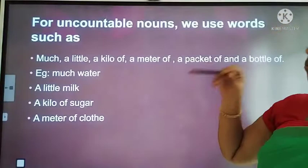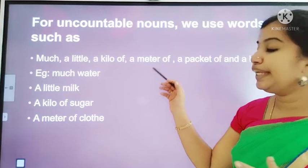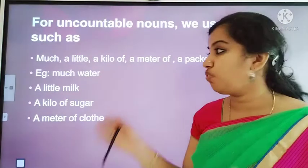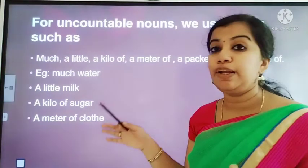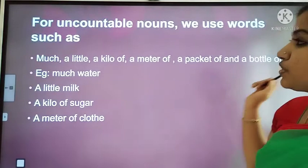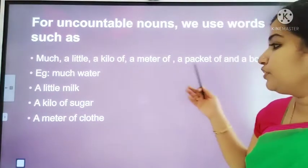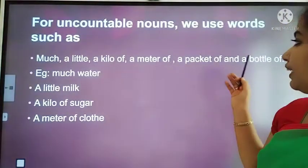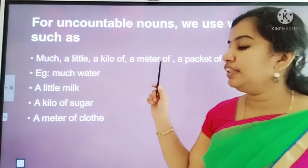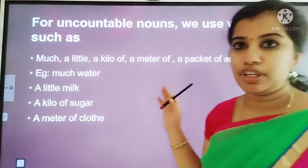For uncountable nouns, we use words such as: much, a little, a kilo of, a meter of, a package of, a bottle of. Look at some examples: much water, a little milk, a kilo of sugar, a meter of cloth, a bottle of water, a bottle of milk. This is the way to use uncountable nouns.